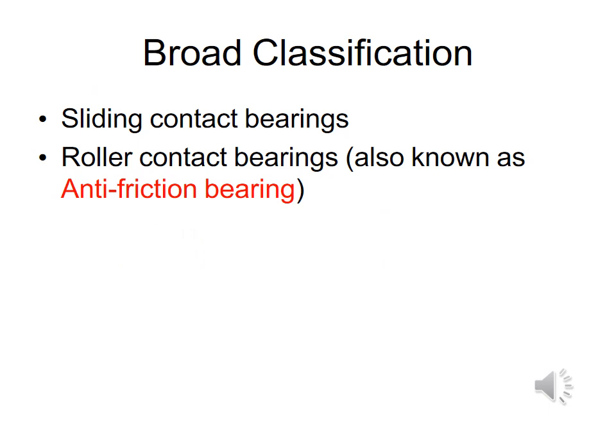Bearings are categorized into two major categories: sliding contact bearings and rolling contact bearings, which are also termed anti-friction bearings. In rolling contact bearings, the contact between the bearing surfaces is rolling, whereas in sliding contact bearings, the contact between the bearing surfaces is sliding.